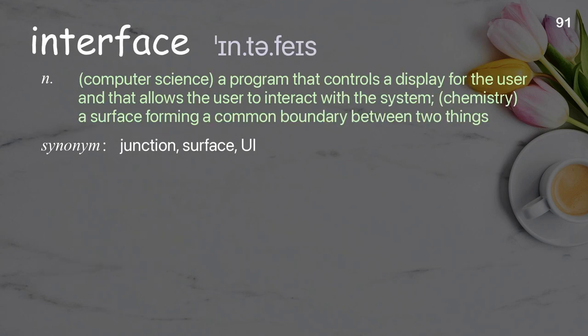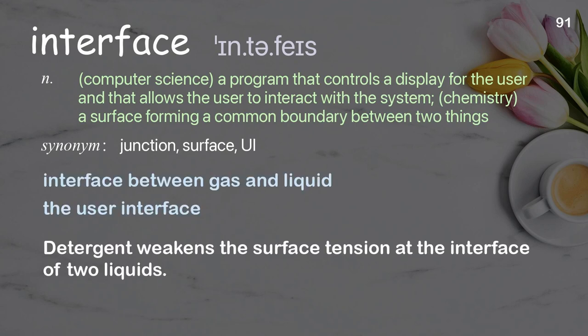Interface: in computer science, a program that controls a display for the user and allows the user to interact with the system; in chemistry, a surface forming a common boundary between two things. Examples: interface between gas and liquid; the user interface; detergent weakens the surface tension at the interface of two liquids.